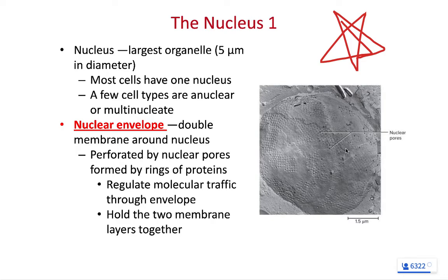This is a scanning electron micrograph. As we look at the nucleus, it has a membrane on the outside. We refer to the nuclear membrane as a nuclear envelope — it envelops or wraps around the nucleus. It's one of the few double-membrane organelles.